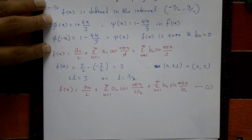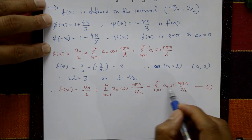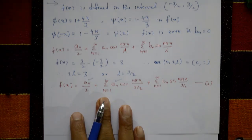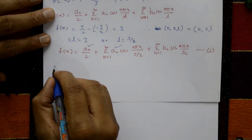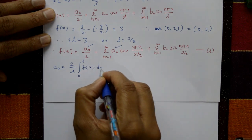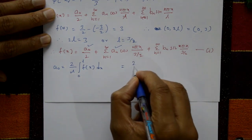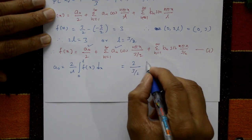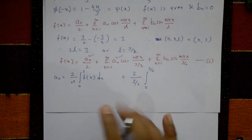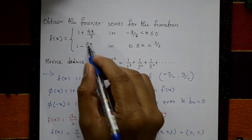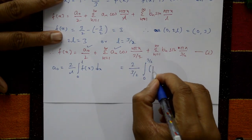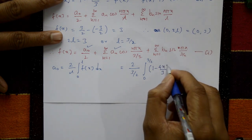Since f(x) is even, bₙ = 0, so we only need aₙ and a₀. Now, a₀ = (2/l) ∫₀ˡ f(x) dx = (2/(3/2)) ∫₀^(3/2) f(x) dx. For 0 to 3/2, f(x) = 1 - 4x/3, so a₀ = (4/3) ∫₀^(3/2) (1 - 4x/3) dx.